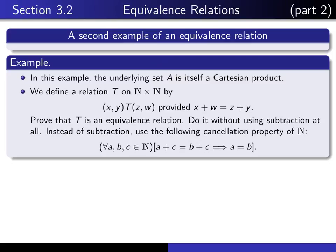We're going to call the relation T. The underlying set is ℕ × ℕ, and we're going to say that element (x,y) of ℕ × ℕ is T-related to element (z,w) provided x + w = z + y. That might seem a little bit unusual to you, but as we'll see in subsequent lectures, this is actually quite a significant example.